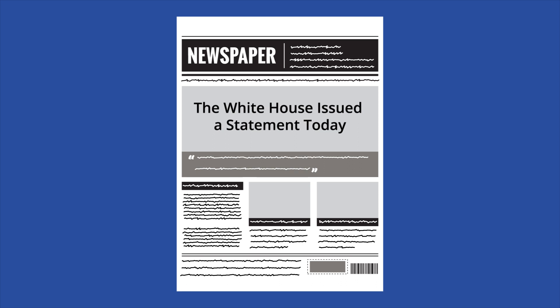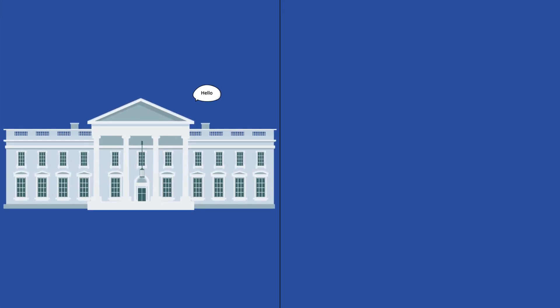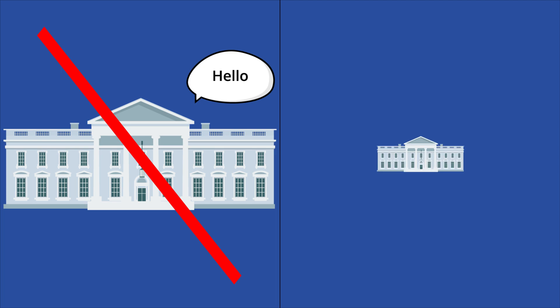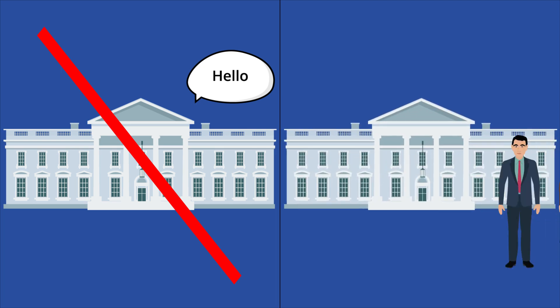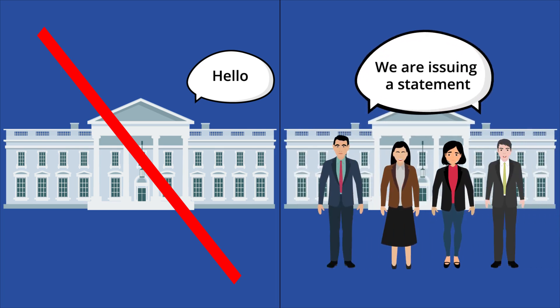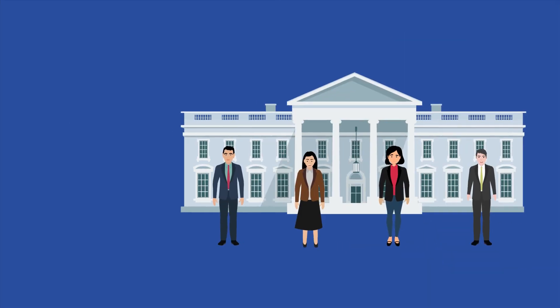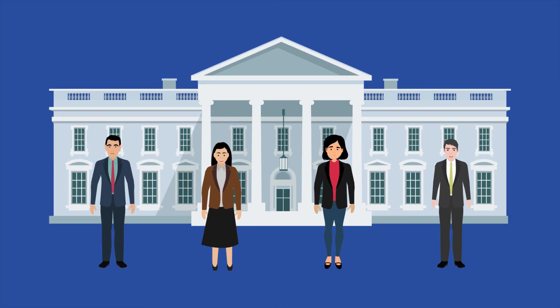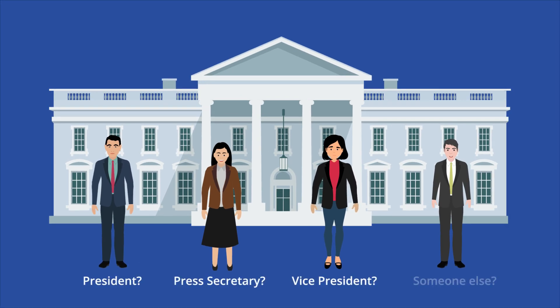For example, a reporter may say, 'The White House issued a statement today.' This is a metonymy because the building we call the White House didn't say anything, but we substitute this phrase for the names of the people who work for the executive government. Using this metonymy leaves us unclear about who exactly issued the statement. Was it the president, the press secretary, the vice president, or someone else? When you notice that a metonymy is imprecise, you should question whether or not it was intended and why.